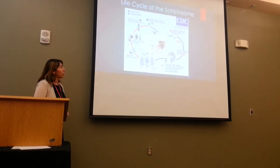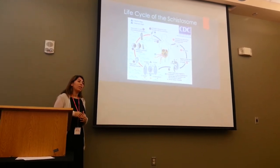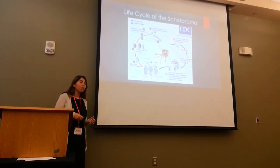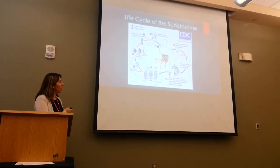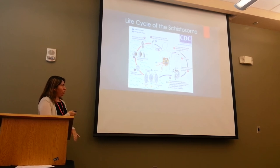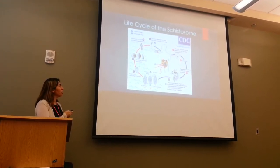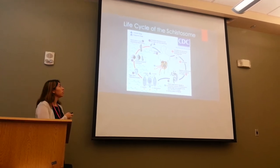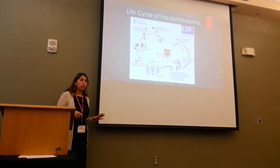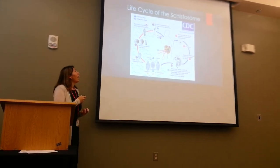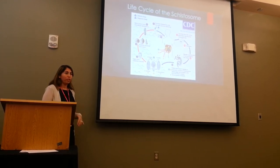The life cycle of the schistosome is a complicated one. This disease is actually contracted through contact with infected fresh water sources. When the eggs come in contact with water, they hatch miracidia, which infects the intermediate host, which is the freshwater snail. There, they mature into cercaria, which is shed into the surrounding fresh water source, and infects the permanent human host percutaneously, or through the skin.